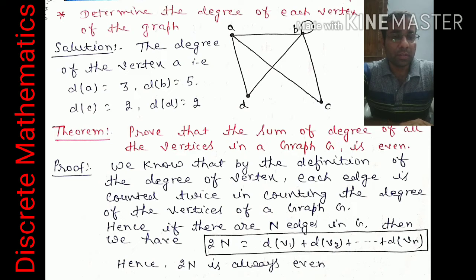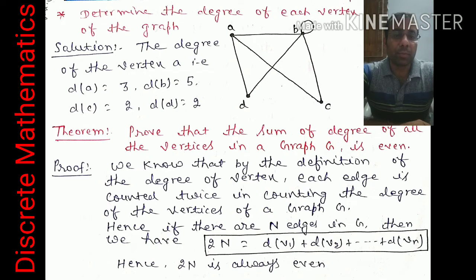Now we have a very important theorem: prove that the sum of degrees of all vertices in a graph G is even. For example, in a triangle with three vertices each connected to two others, each vertex has degree 2, and the sum is 2 + 2 + 2 = 6, which is even. The sum of degrees of all vertices in any graph is always even.